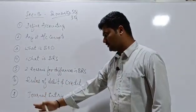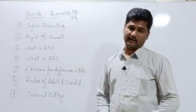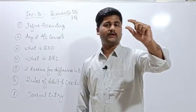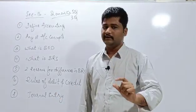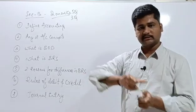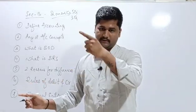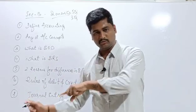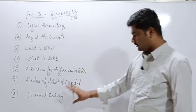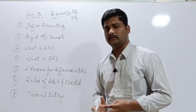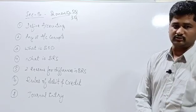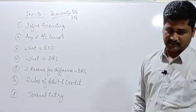Number seven: Journal Entry. When writing a journal entry, you must write the account to be debited, the account to be credited, the amounts on both sides — debit amount as well as credit amount — and also the narration. When you include the narration, the journal entry is called a complete journal entry.